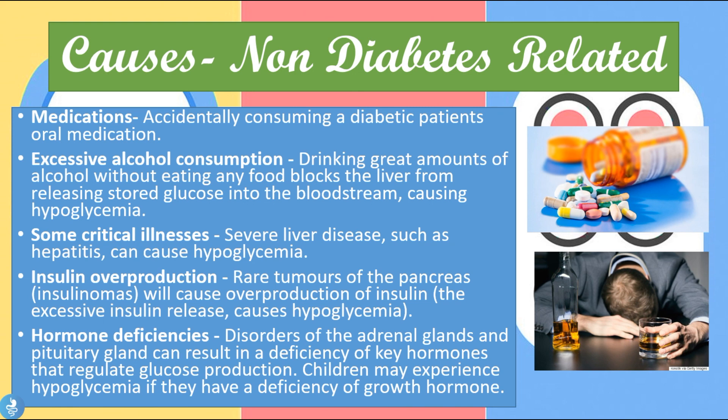Insulin overproduction: sometimes we have rare tumors of the pancreas called insulinomas, which cause an overproduction of insulin, and the excessive insulin release goes on to cause hyperglycemia. Hormone deficiencies: disorders of the adrenal glands and the pituitary gland can also result in deficiency of key hormones that regulate glucose production. Additionally, children may experience hyperglycemia if they have a deficiency in the growth hormone. So these are all non-diabetic related causes of hyperglycemia.